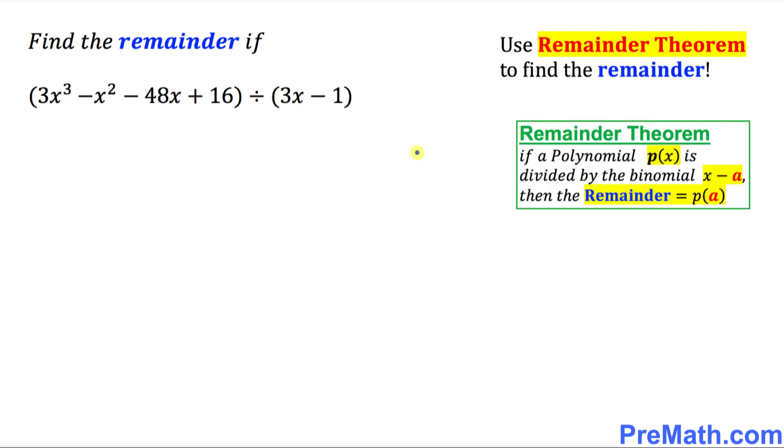So the easiest possible method to find the remainder is called remainder theorem. Here is the remainder theorem definition. If a polynomial P of x is divided by the binomial x minus a, then the remainder equals to P of a. So let's get started.